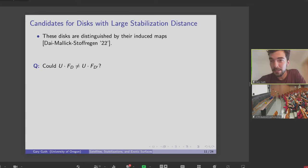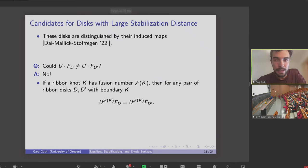And so the next thing you want to do is say, well, if I multiply by U, are they still different? And unfortunately, the answer is no. The maps end up being equal.